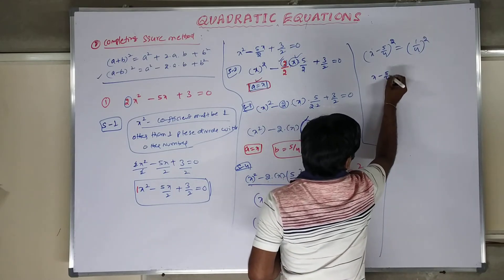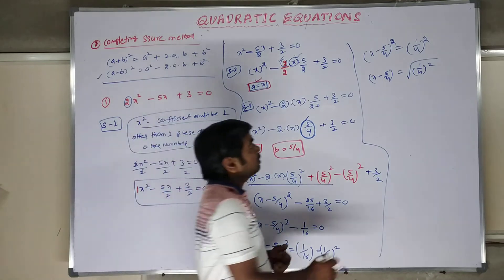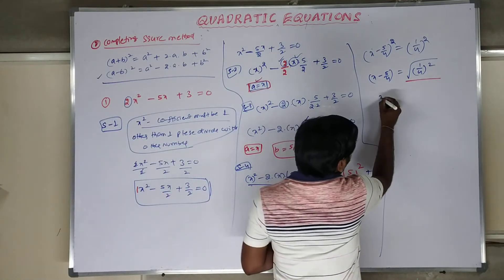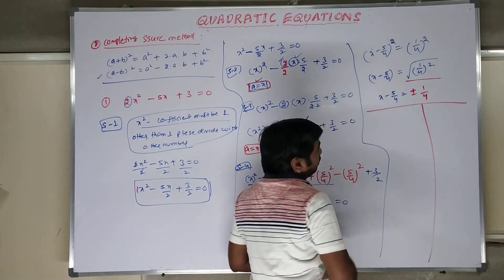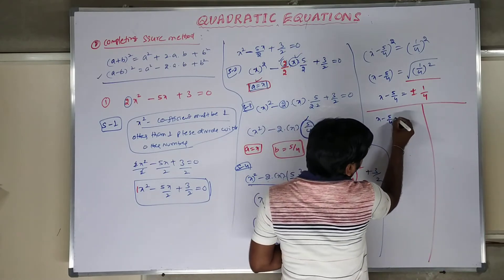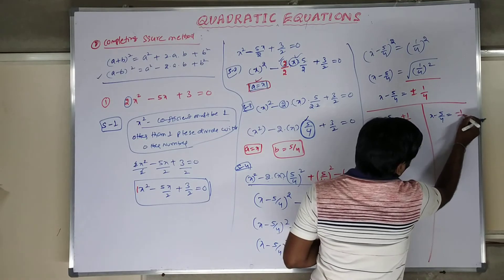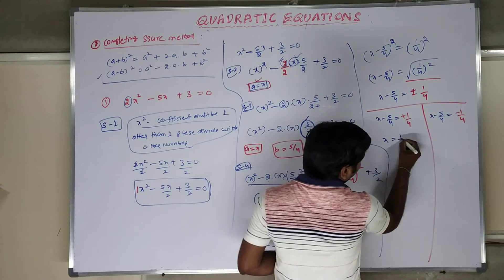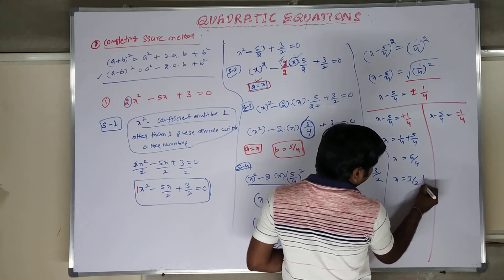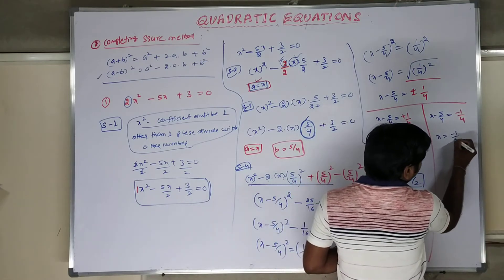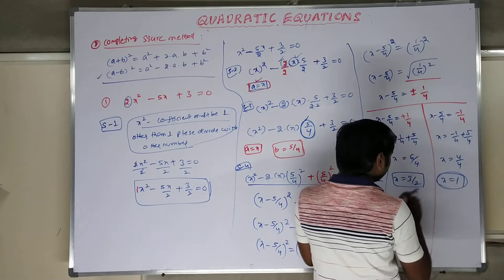Taking square roots: x minus 5/4 equals plus or minus 1/4. This gives two cases. Case 1: x minus 5/4 equals plus 1/4, so x equals 5/4 plus 1/4 equals 6/4 equals 3/2. Case 2: x minus 5/4 equals minus 1/4, so x equals 5/4 minus 1/4 equals 4/4 equals 1. These are the two answers.